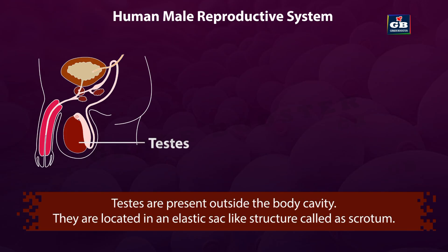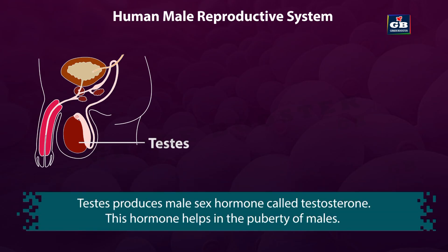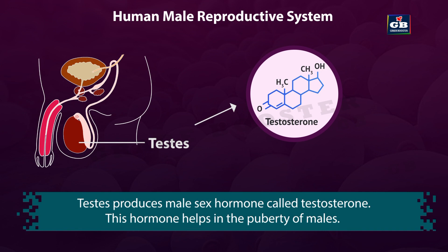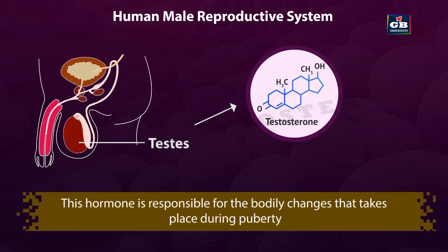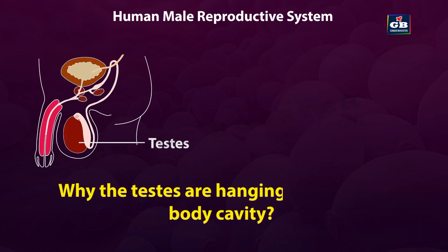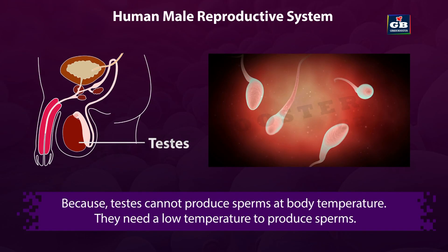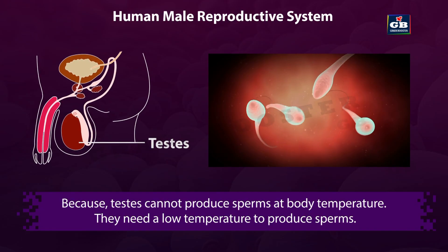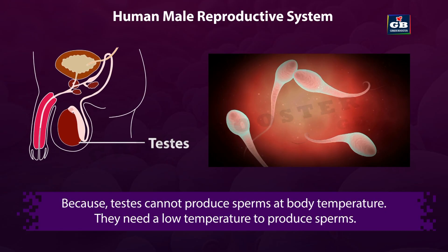Testes are present outside the body cavity. They are located in an elastic sac-like structure called the scrotum. Testes produce the male sex hormone, testosterone, which helps in puberty of males and is responsible for the bodily changes that take place during puberty. Why are the testes hanging outside the body cavity? Because testes cannot produce sperms at body temperature — they need a lower temperature to produce sperms. That is why they are present outside the body cavity.